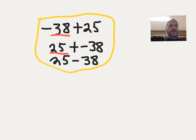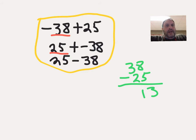This problem basically ends up being 38 minus 25 because my signs are different - I have a negative 38 and a positive 25. I have a difference of 13.